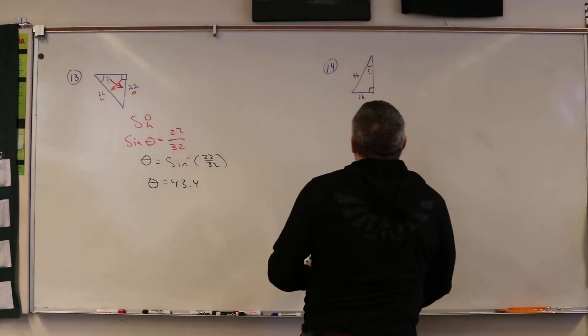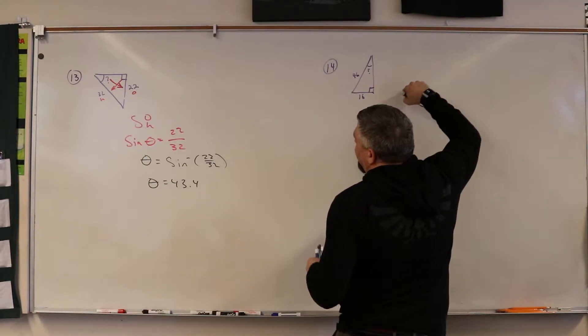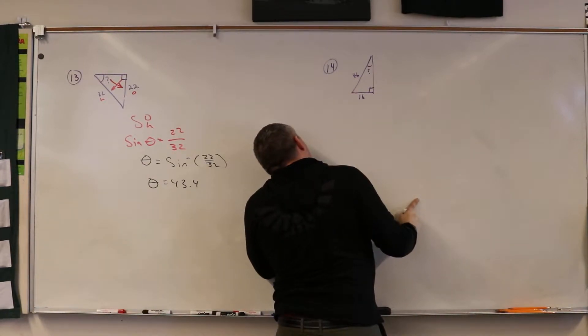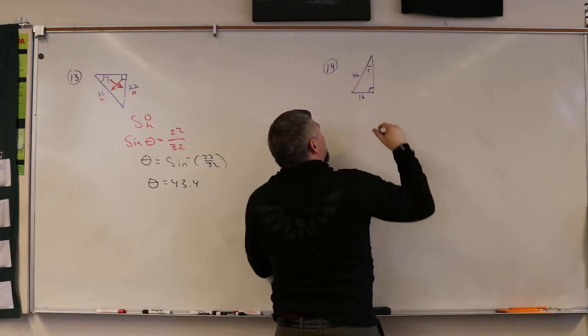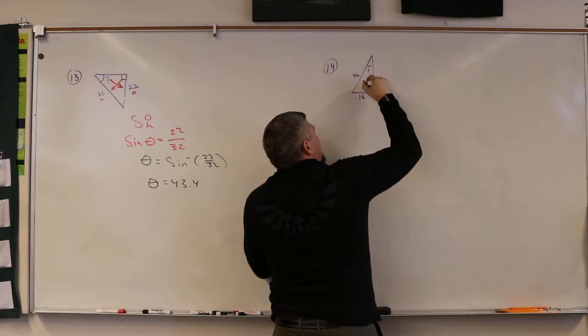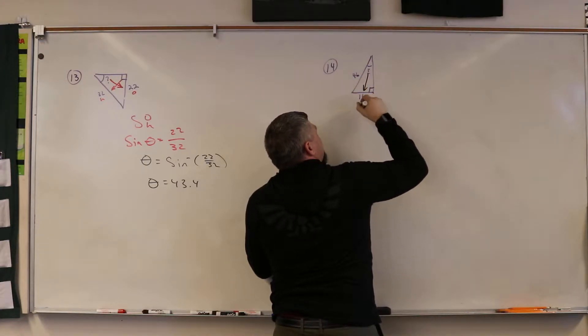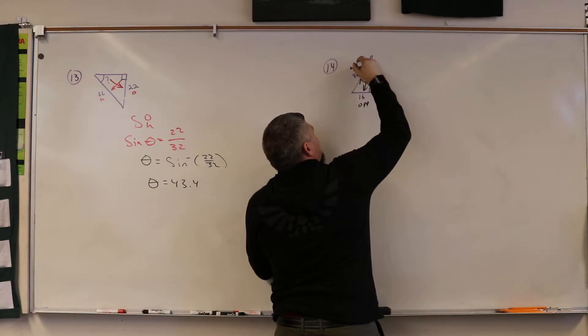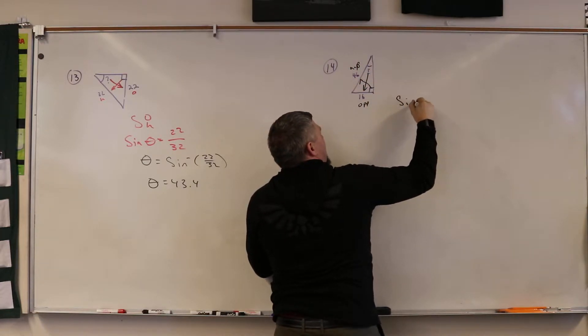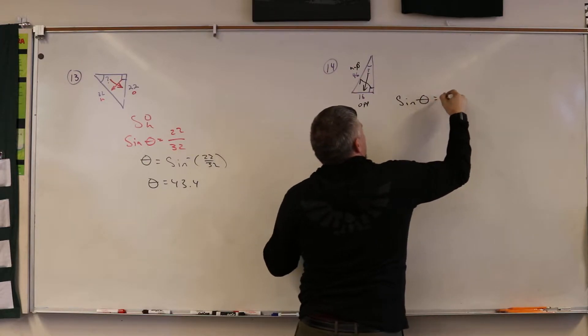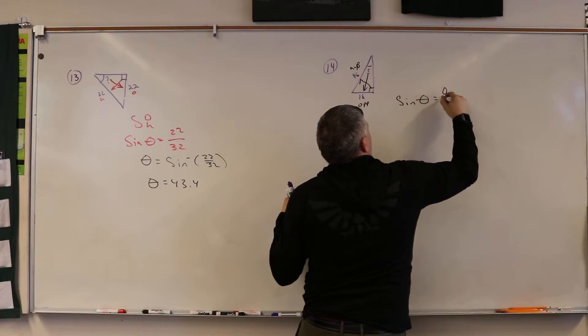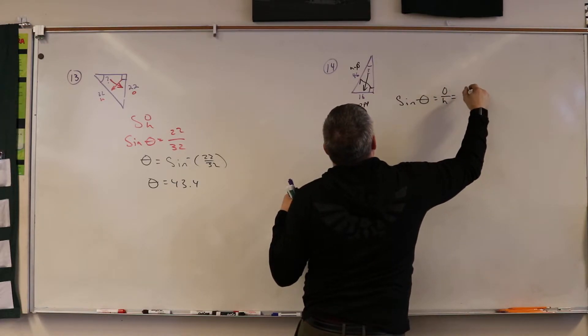Next problem: 16 and 46. This is opposite and this is hypotenuse again. So sine of theta equals opposite over hypotenuse.